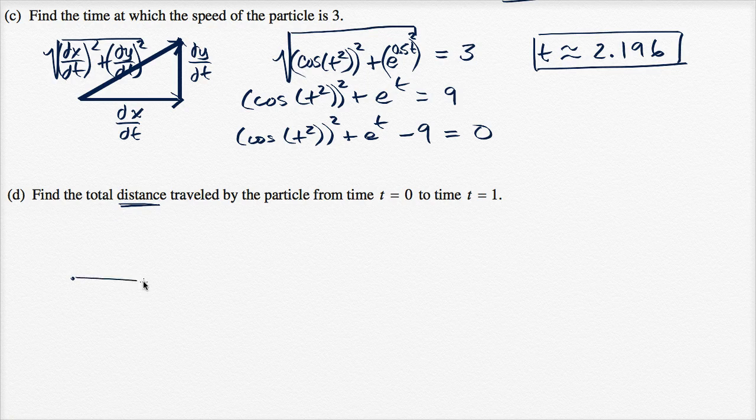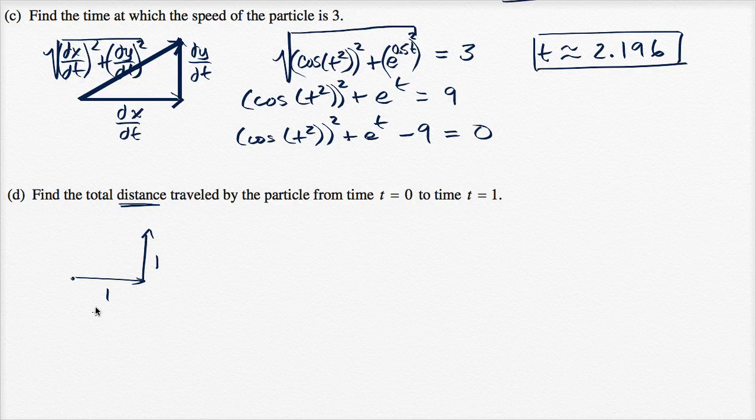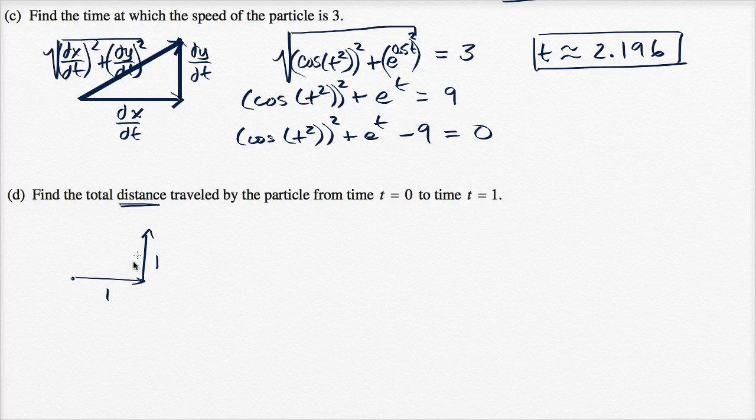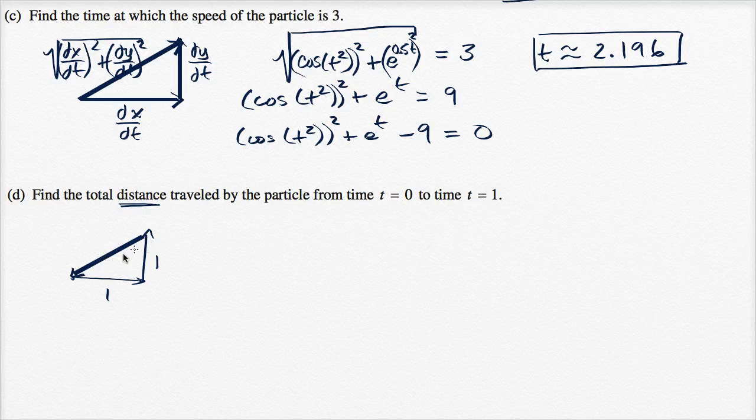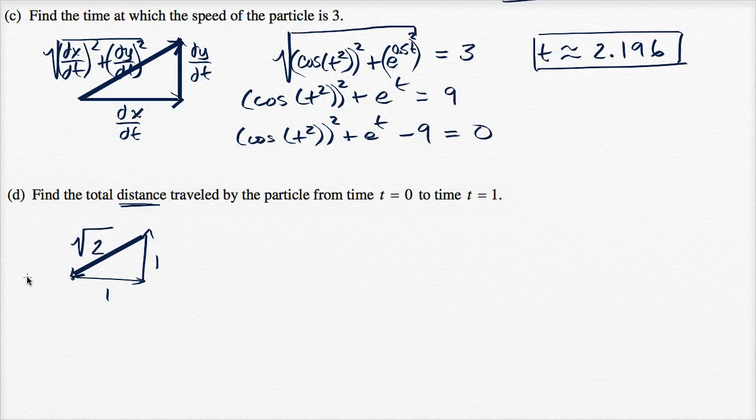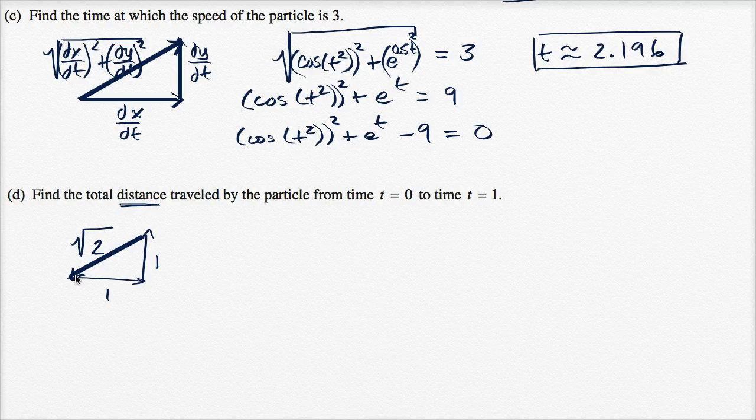So if something goes to the right by one and then goes up by one, their distance is two. And actually then if they go back, if they go back to the original starting point, this distance right here would be the square root of two. The displacement would be zero. They got back to where they started, but the distance would be one plus one plus the square root of two.